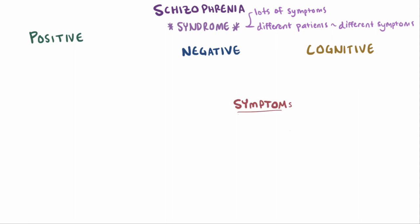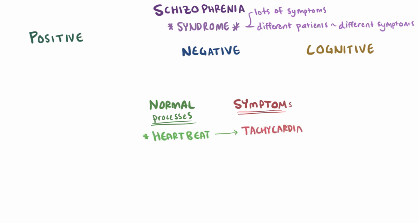Most human symptoms from any illness are extreme versions of a normal physiologic process. For example, everyone has a heartbeat, and tachycardia is a fast heartbeat. In the same way, everyone has a normal body temperature, but during a fever that temperature is higher.